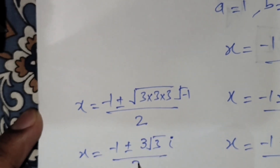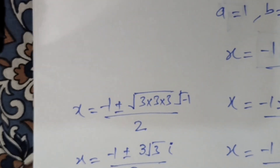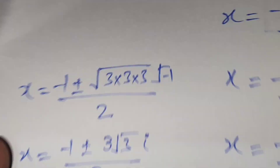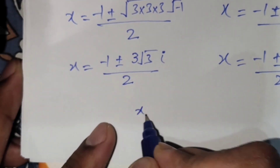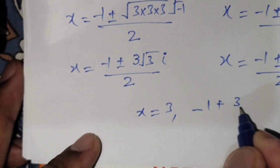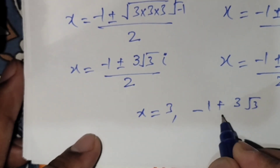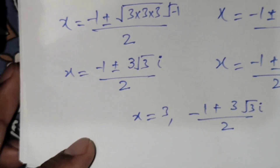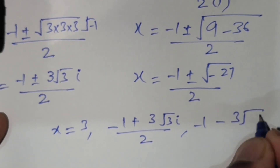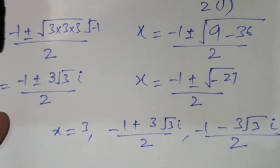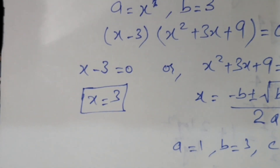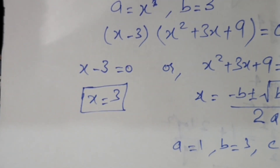So the final answers are: x equals 3, x equals (minus 1 plus 3√3·i) over 2, and x equals (minus 1 minus 3√3·i) over 2. Thank you for watching my video, please like, share and subscribe, and don't forget to press the bell icon.